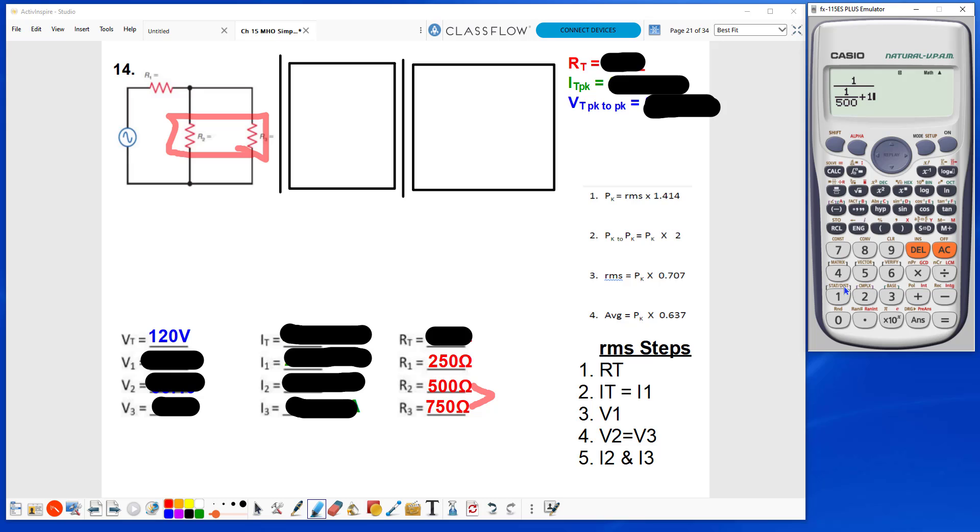scroll over, plus 1 over under 750, this gives me 300 ohms.